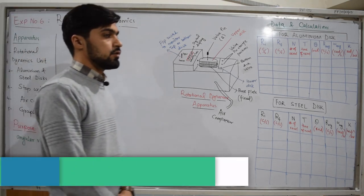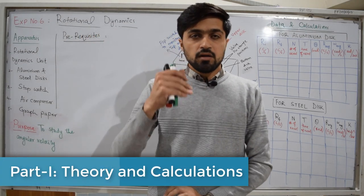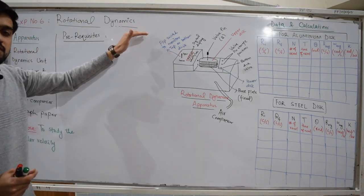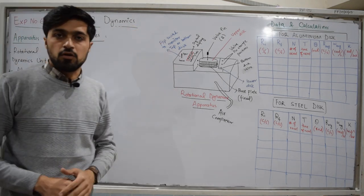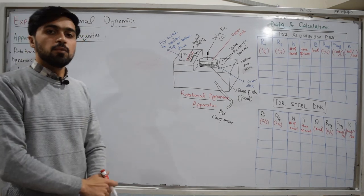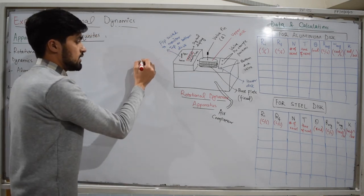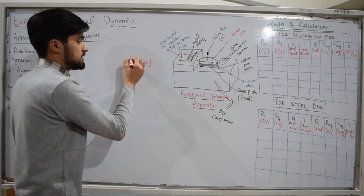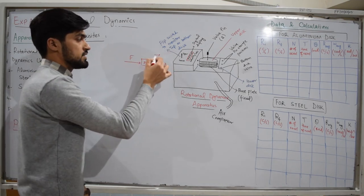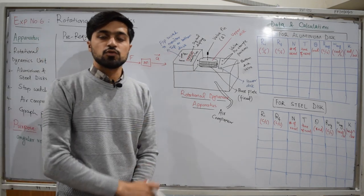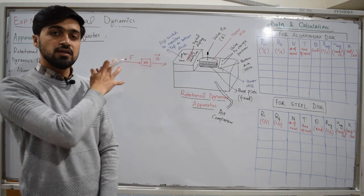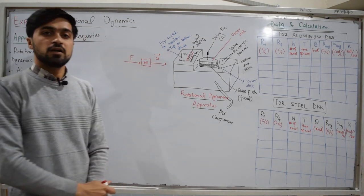So first of all, what is rotational dynamics? Dynamics is the branch of physics which deals with the motion of objects when a force is applied on that object. Dynamics is actually the branch of mechanics which deals with the motion of objects under the influence of force. If we have a block of mass M and apply a certain force, it will move with some acceleration A — this is the part of mechanics called dynamics.